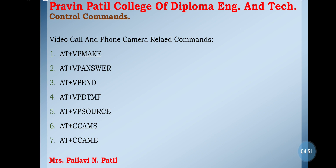Next, video call and phone camera related commands. The first is AT plus VPNK. This command is used to originate a video call. Before issuing the command, the user can select the video call TX source. The next AT plus VPNK is used to answer an incoming video call. If there is no incoming video call, only an OK response is given. The third is AT plus VPA. This command is used to end a video call. If recording is ongoing, the command will stop recording and end the video call. Additionally, this command can be used to reject an incoming video call.